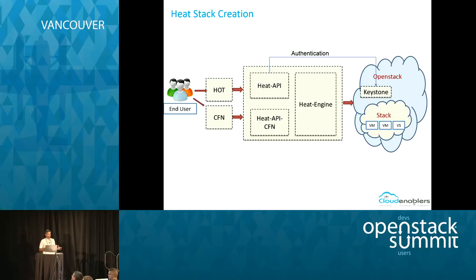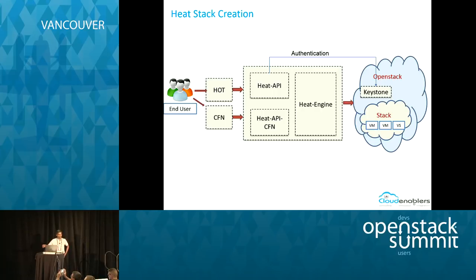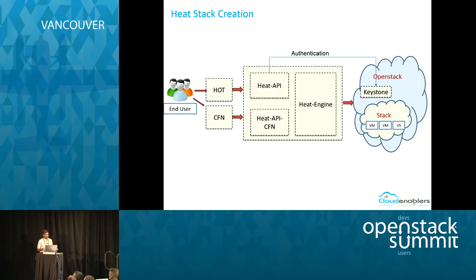For HEAT stack creation, the end user can apply a HOT template or a CFN template. It goes through the API and the HEAT engine orchestrates the different tasks to the OpenStack resources. It is authenticated through Keystone. The whole set of resources provisioned through the HEAT stack is maintained as a stack, and we can perform lifecycle operations — abandon, update, and manage the full set of provisioned resources.